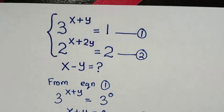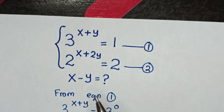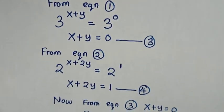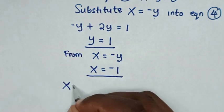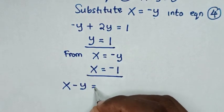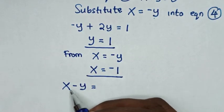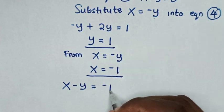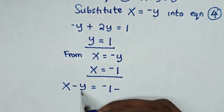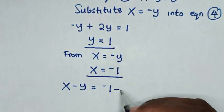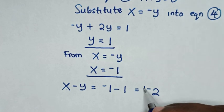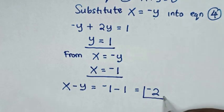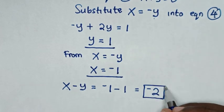Now back to our problem, to find the value of x minus y: x minus y equals negative 1 minus 1, which equals negative 2. So the answer for the value of x minus y is negative 2.